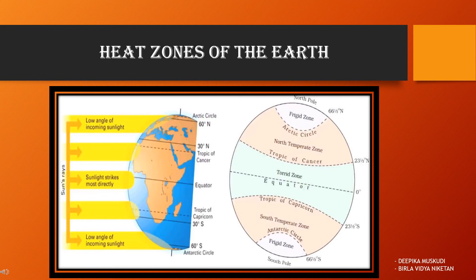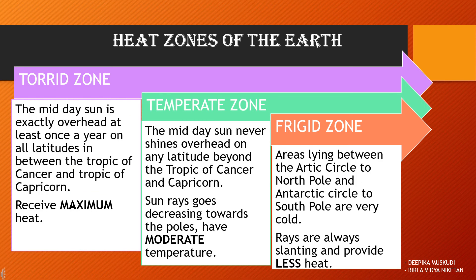Students, as you can see in the picture, the sun rays falling on the equator are more direct compared to the sun rays falling on the poles, which are slanting in nature. Therefore, the equator receives the maximum amount of heat compared to the poles, whereas a medium amount of heat is received at about 30 degrees north and south latitudes. This picture depicts why the heat zones of the earth are different in nature. The midday sun is exactly overhead at least once a year on all latitudes between the Tropic of Cancer and the Tropic of Capricorn.